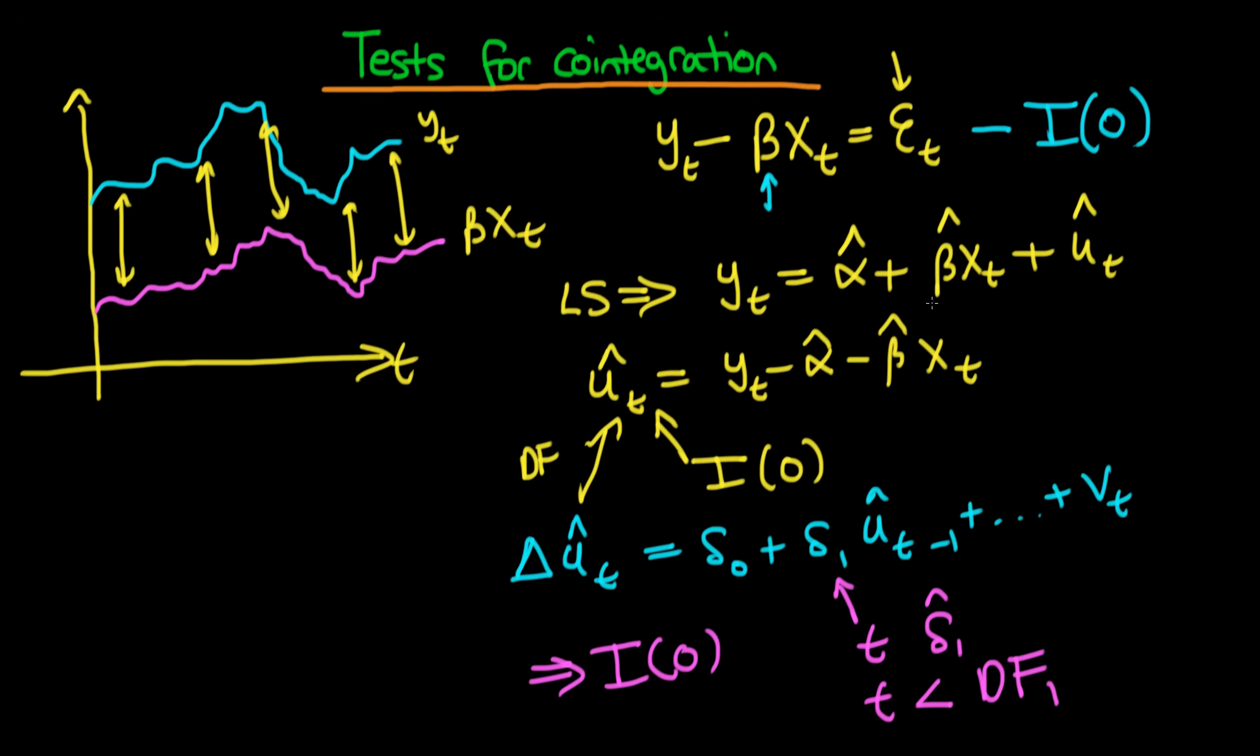But there is a problem here. And it's because of the fact we don't actually know this true parameter beta. We only estimate it. And because of that, carrying out this particular test by comparing the t stat on the estimated regression coefficient on the lagged value of the residual is not quite right. But it turns out there is actually quite a simple workaround to this.